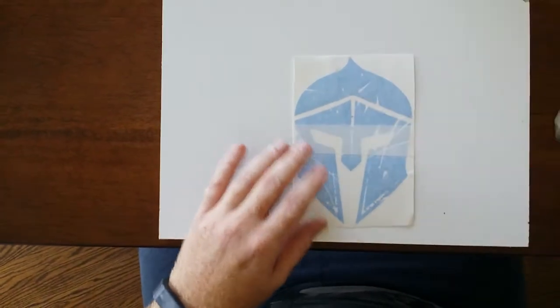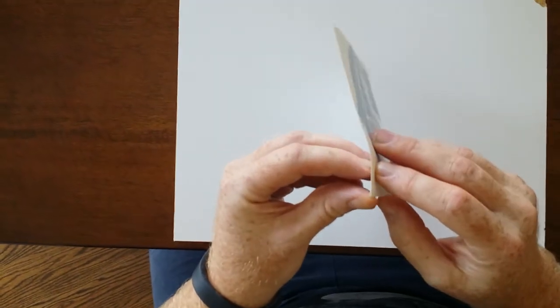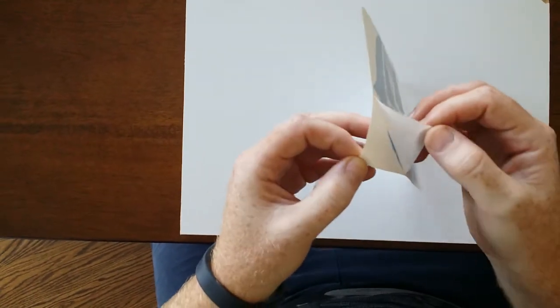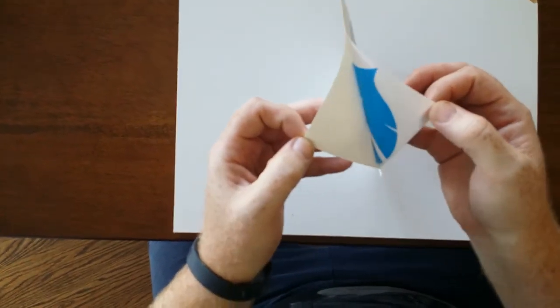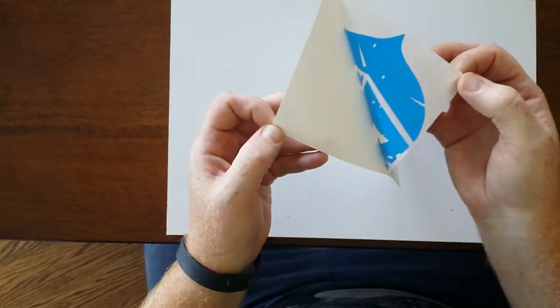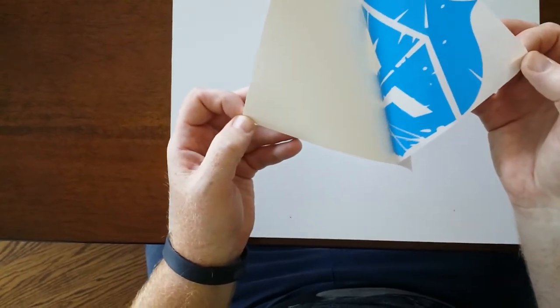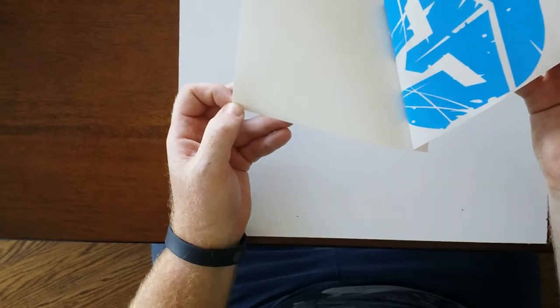Once you've rubbed this out, then you go to the back here and very gently you pull this up. Now the key thing here is to make sure that as you're pulling this off, you don't lose any of the sticker on the backing.